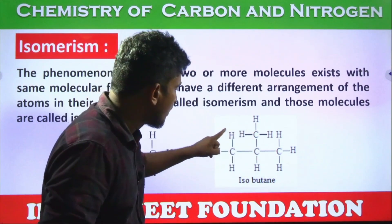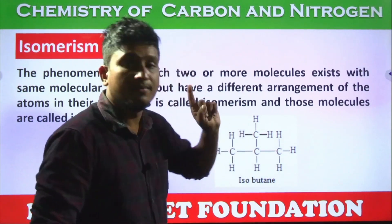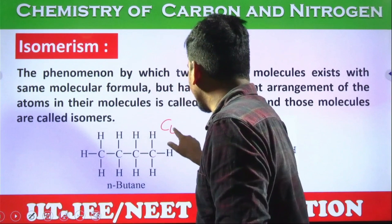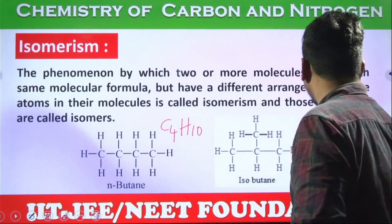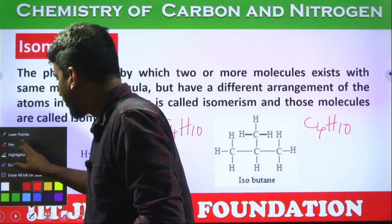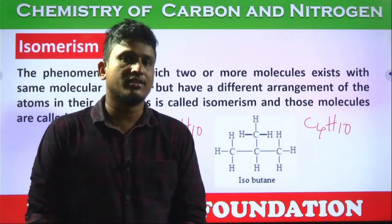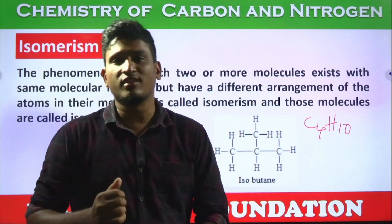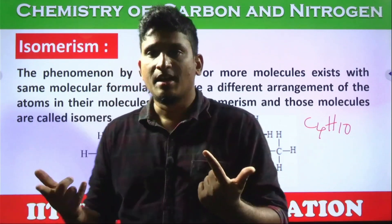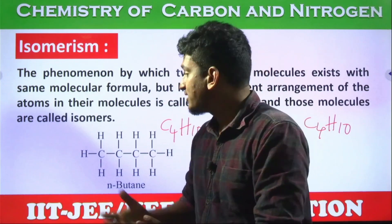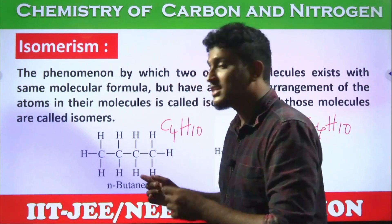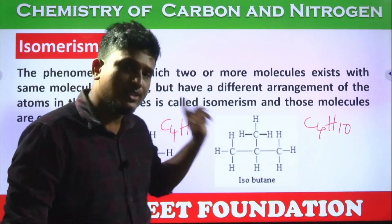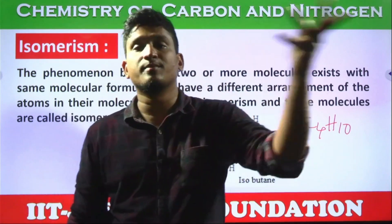The second compound also has the formula C4H10 — the formula is not changing. So are both compounds the same? No! They have the same chemical formula but the arrangement of atoms is different. In the first compound, all four carbons are arranged linearly, but in the second, only three carbons are in a linear chain and one is attached to the middle carbon. If even one bond changes, it produces a completely different compound.